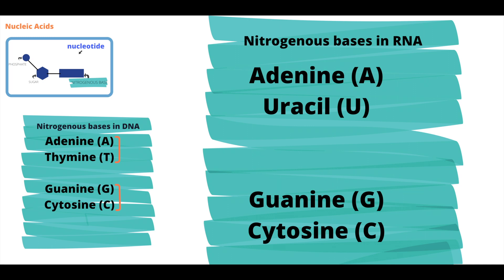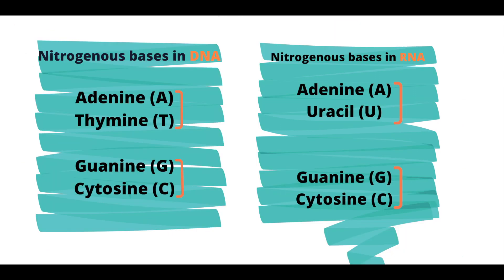The nitrogenous bases in RNA are adenine, uracil, guanine, and cytosine. Adenine and uracil pair together, and guanine and cytosine pair together. If we compare DNA and RNA, thymine is replaced by uracil in RNA.